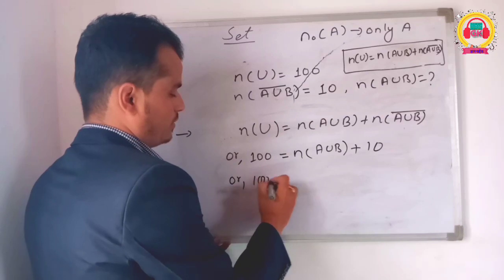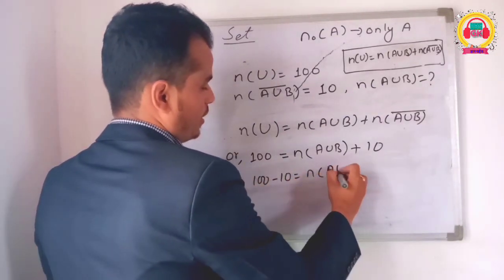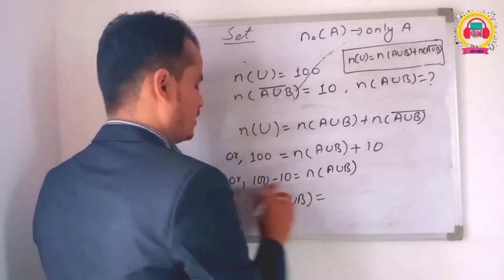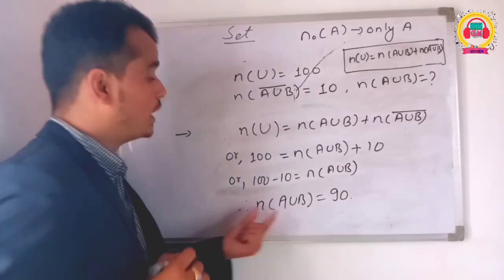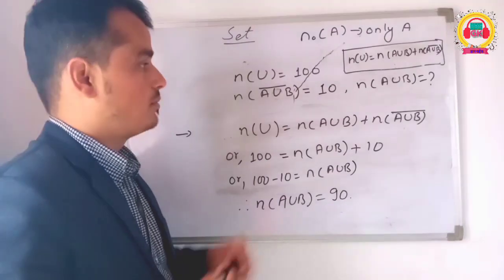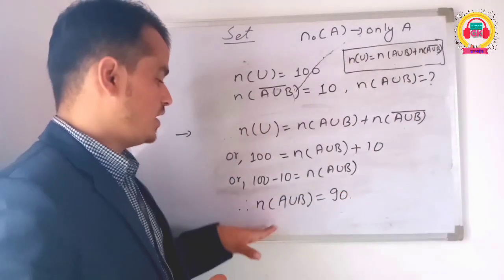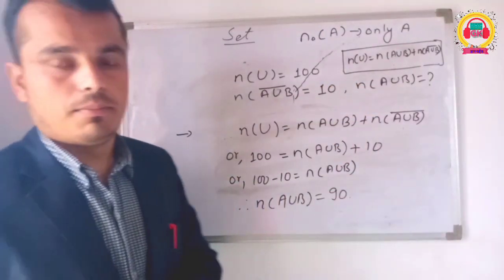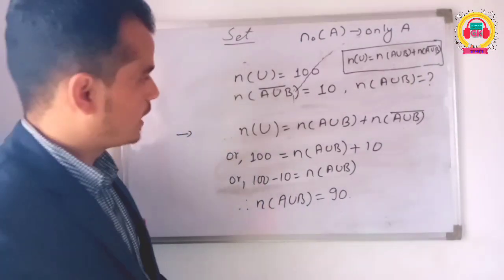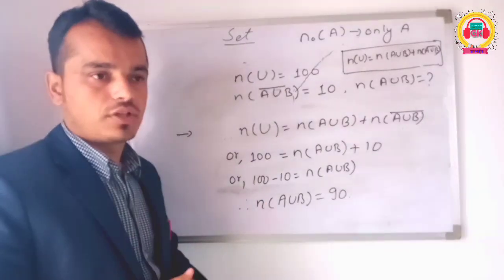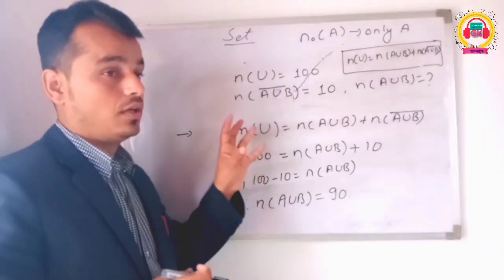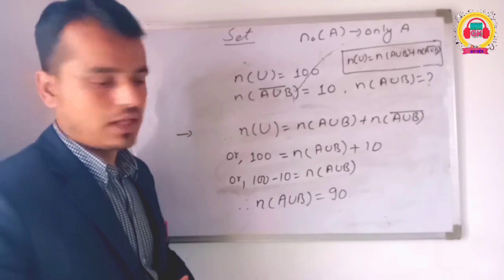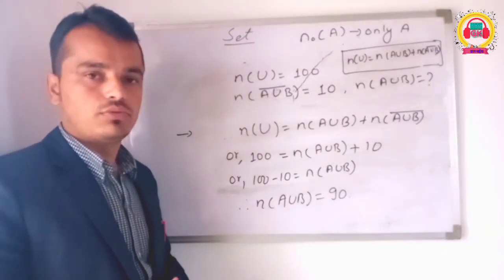100 minus 10 equals the number of A union B. Number of A union B equals number of A plus number of B minus number of A intersection B — that is the formula. Okay, we need to find the values. I will see you in the next class. I will see you in the next video.